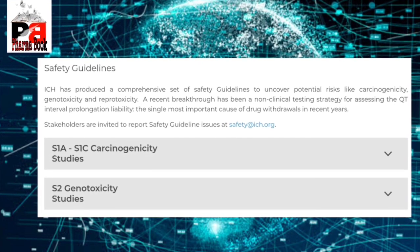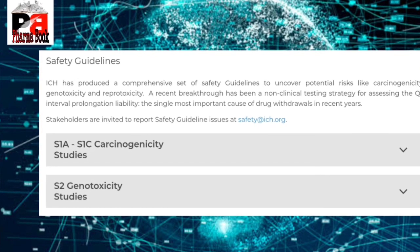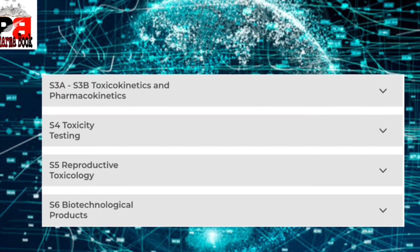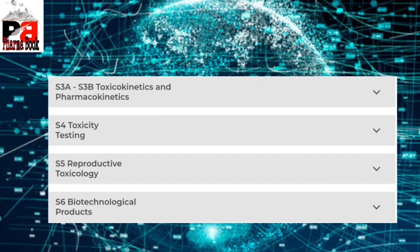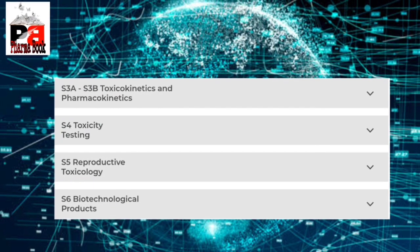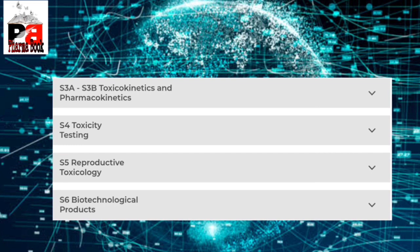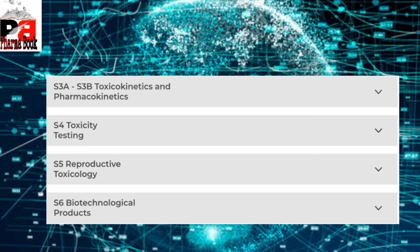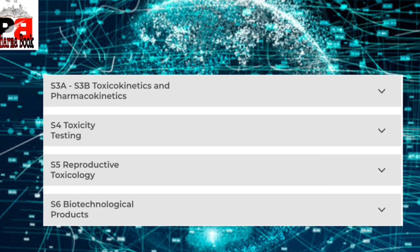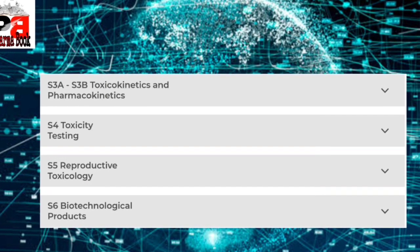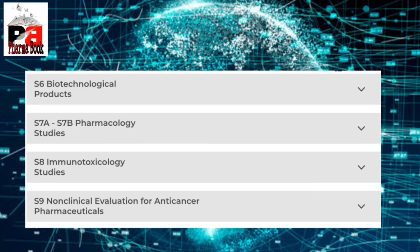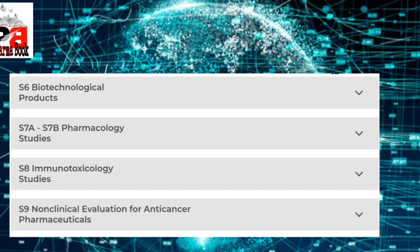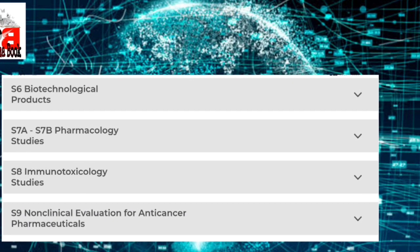S means Safety. The safety guidelines are: S1 Carcinogenicity Studies, S2 Genotoxicity Studies, S3 Toxicokinetics and Pharmacokinetics, S4 Toxicity Testing, S5 Reproductive Toxicology, S6 Biotechnological Products, S7 Pharmacology Studies, S8 Immunotoxicology Studies, S9 Non-clinical Studies for Anti-cancer products.